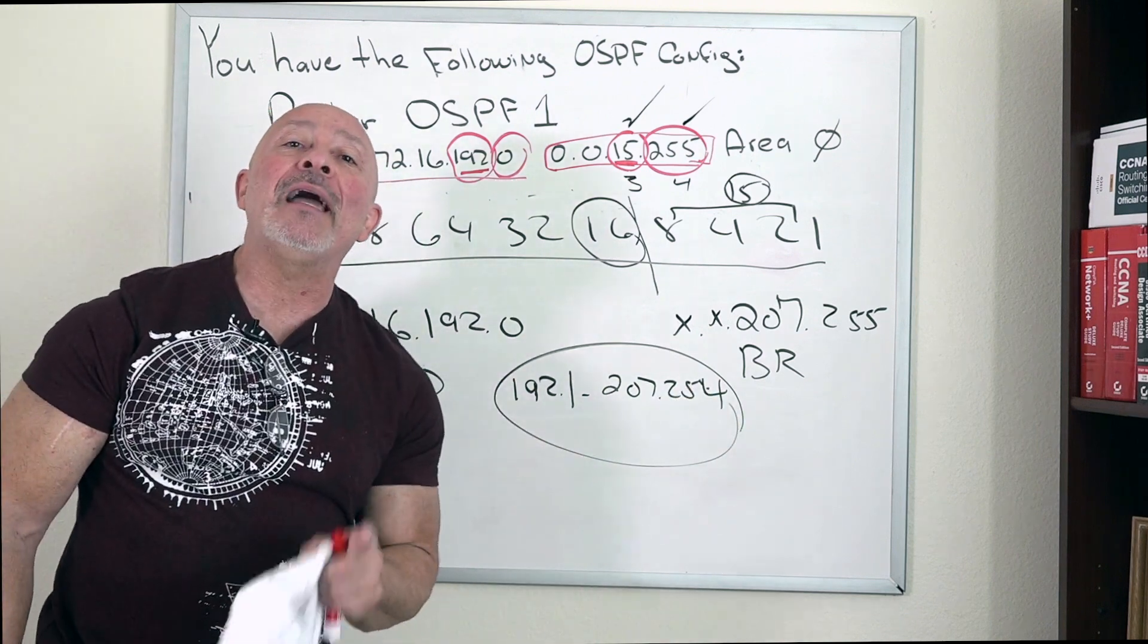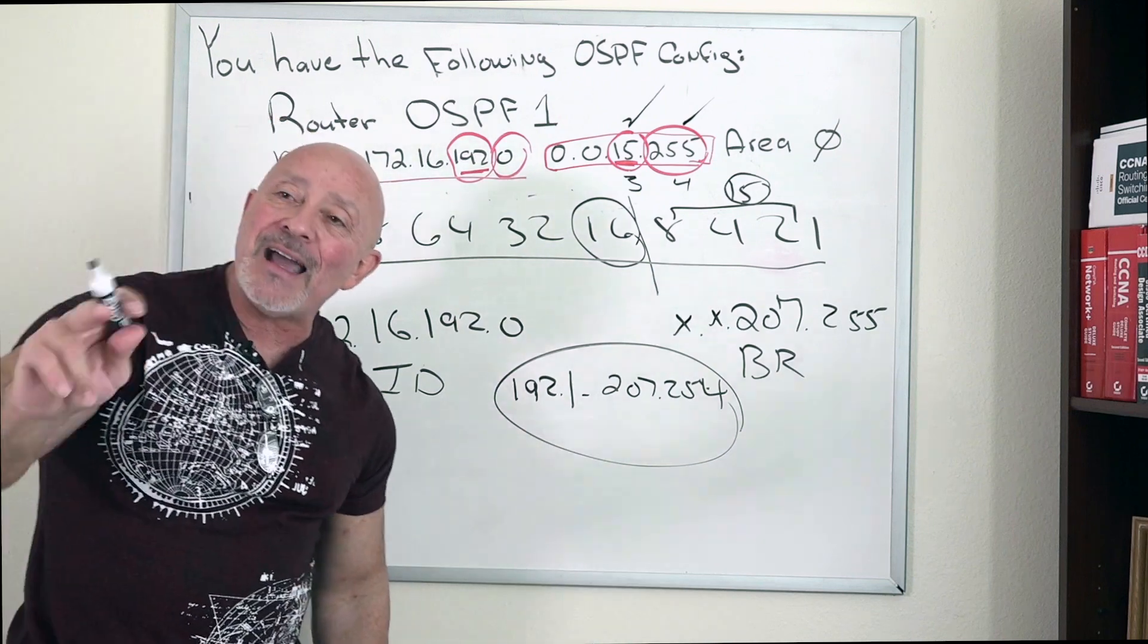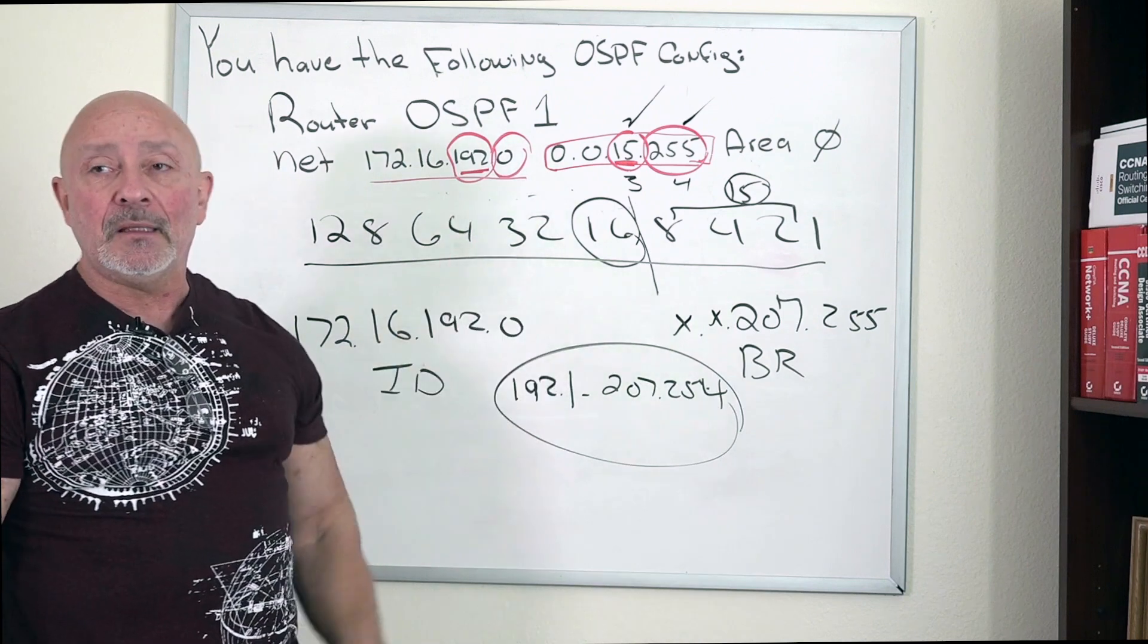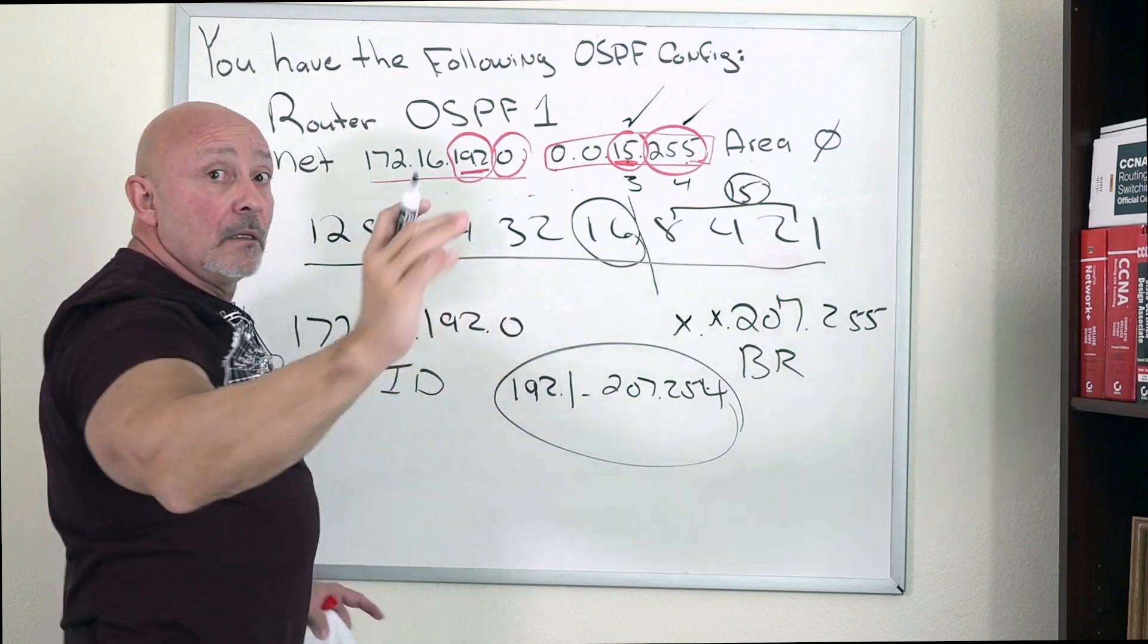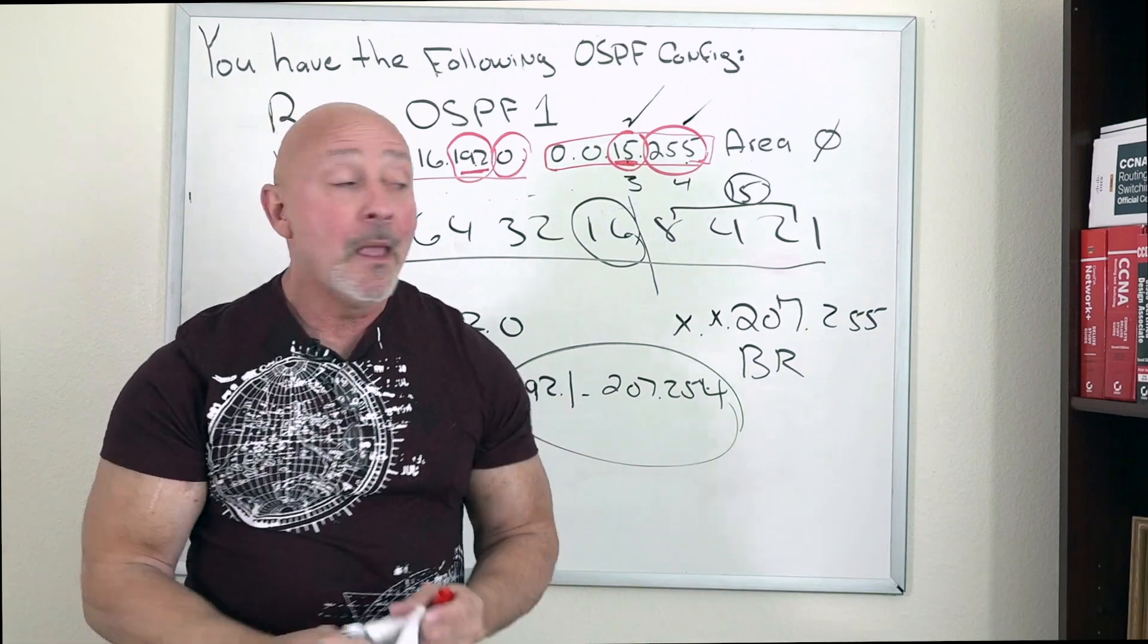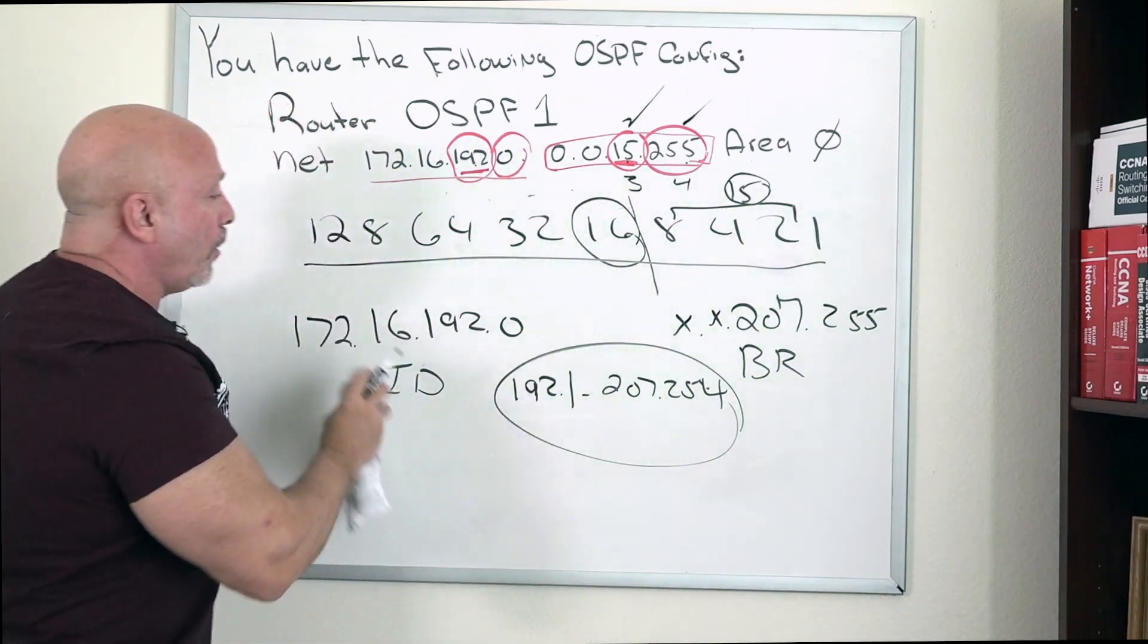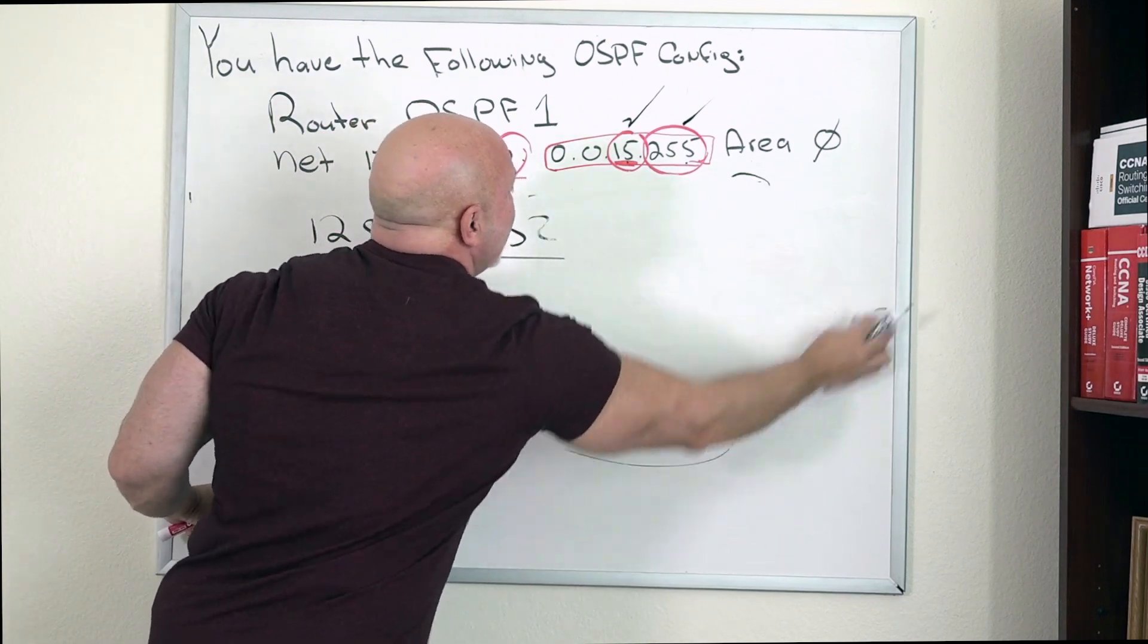That's why 193.255 falls in this range, that is why you're able to do it. You gotta learn this method because all I did was add this to this, this to this, gives me the broadcast. Now I know my network, now I know my broadcast. Whatever is in between, we're good. What people get confused with, and I did it deliberately, is when they see something different.